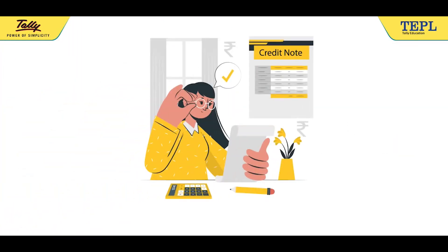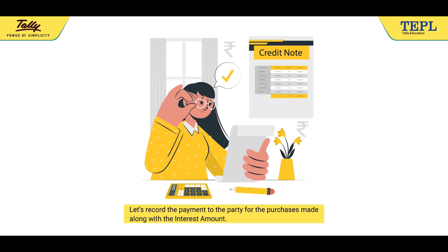After recording the credit note voucher for bringing the interest payable amount in the books of account, in this section you will learn how to record the payment to the party for purchases made along with the interest amount.